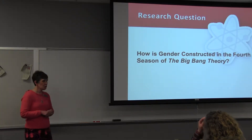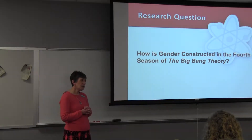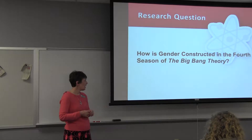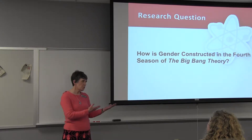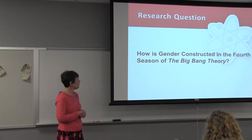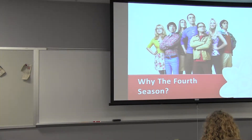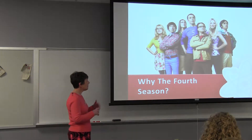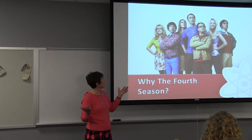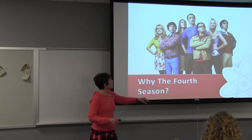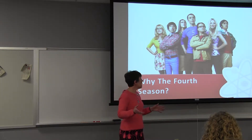You start with your research question. In her case — and it's a good idea especially in rhetorical analysis — you don't ask a yes or no question. You ask a question that's going to let you explore the artifact. So: how is gender constructed in the fourth season of Big Bang Theory? She limited her study to one season because that was when new characters were added. Was it the girlfriend of Sheldon's? It was — she was introduced. It was Blossom.